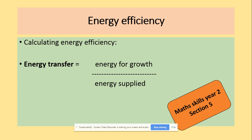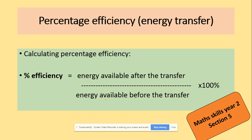Energy efficiency is another equation: energy used for growth divided by energy supplied. We can also use the percentage efficiency, which examiners would prefer — it's the energy available after transfer divided by energy available before transfer, multiplied by 100%.